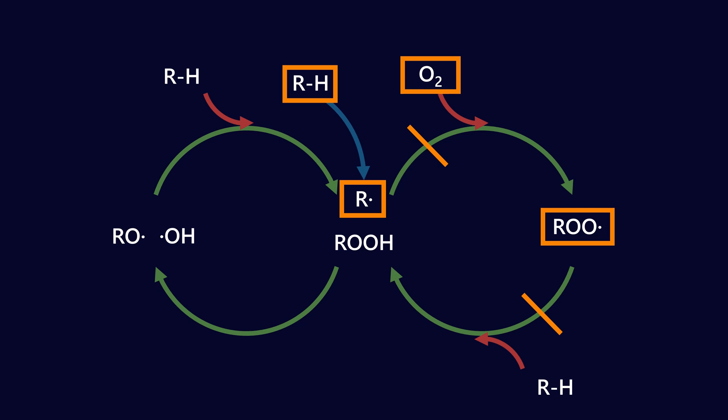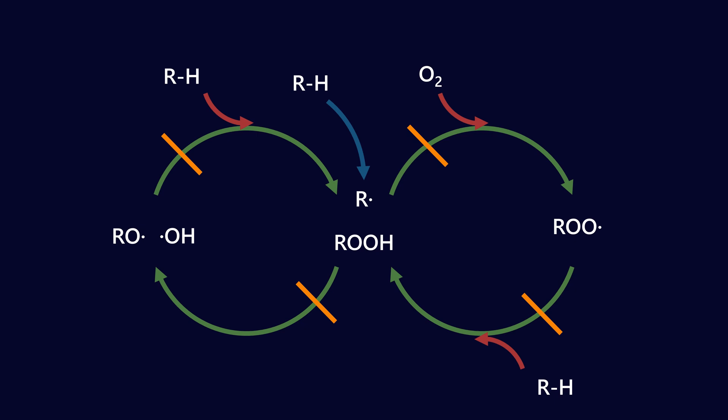The second pathway is the peroxy radical — decomposition products. We can intercept and neutralize those, which is another loop in the auto-oxidation cycle that we can prevent. Then we've got peroxide decomposers; in a previous video we talked about the way ZDDP is able to decompose peroxide products. And finally, we've got alkoxy and hydroxy radicals which can also be intercepted. In this video, we're talking about how primary antioxidants intercept the peroxy radicals as well as the alkoxy and hydroxy radicals.